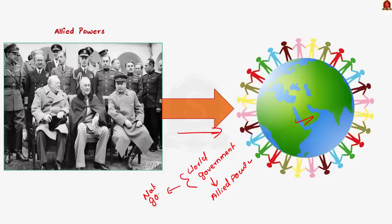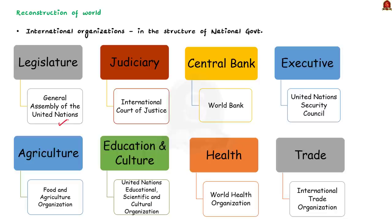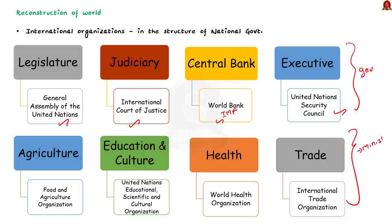Think about it — there is a legislature, which is the General Assembly of the United Nations. Then there is the Judiciary, which is the International Court of Justice. A central bank, which is the World Bank and IMF, and an executive, which is the United Nations Security Council. Not only this, the architects of the post-war order also established institutions which were equivalents of many ministries. For example, Food and Agriculture Organization resembles the Ministry of Agriculture. For Education and Culture, we have UNESCO. For Health, we have WHO.